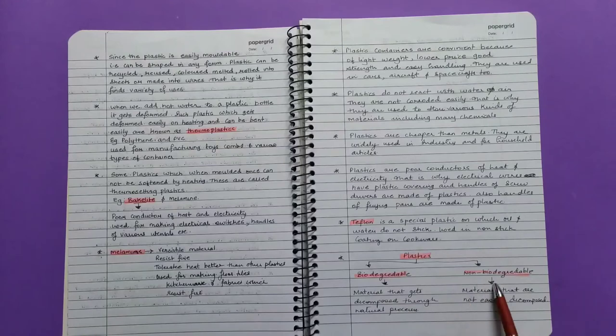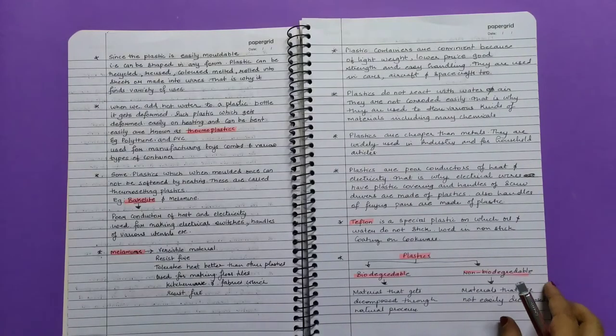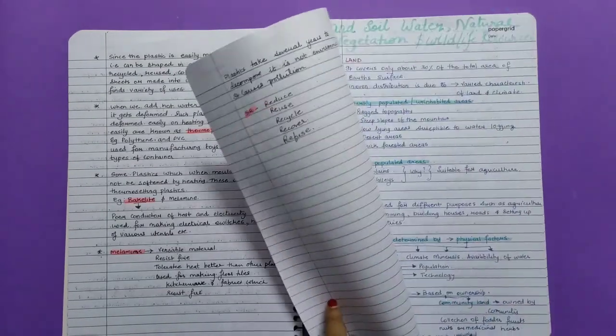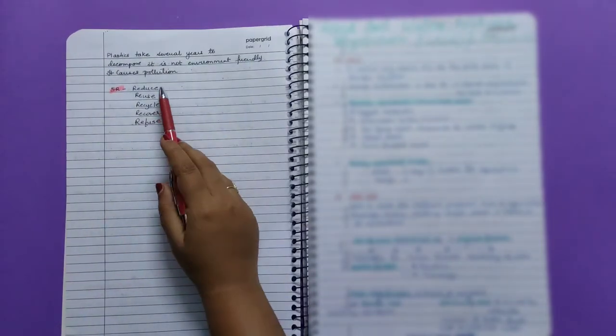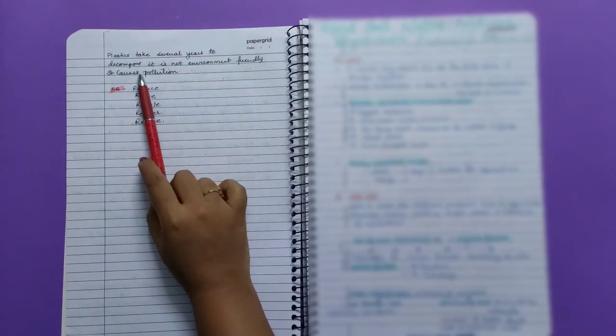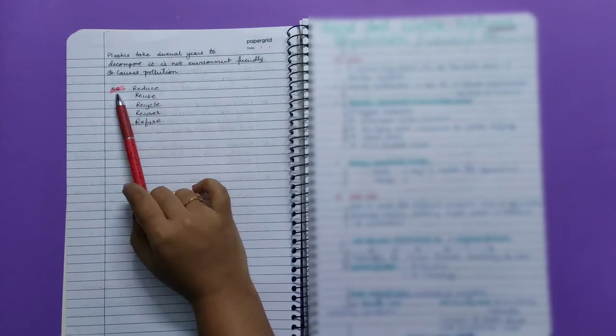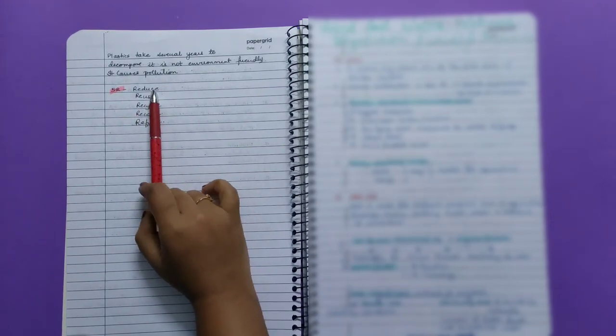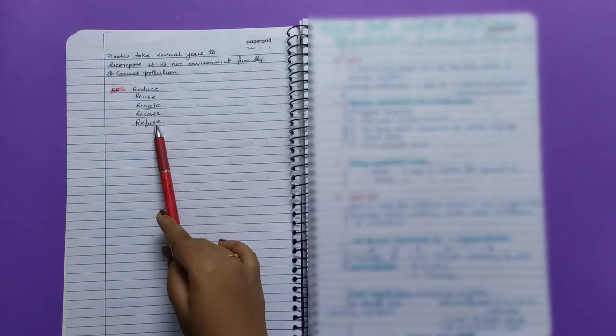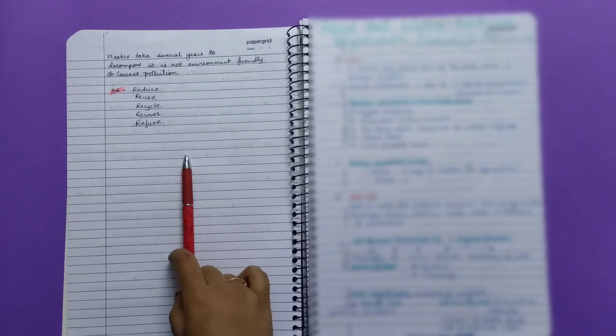Plastics can be biodegradable or non-biodegradable. Biodegradable materials get decomposed through natural processes. Non-biodegradable materials are not easily decomposed. Plastic takes several years to decompose. It is not environment-friendly and causes pollution. The five R's are: reduce, reuse, recycle, recover, and refuse.